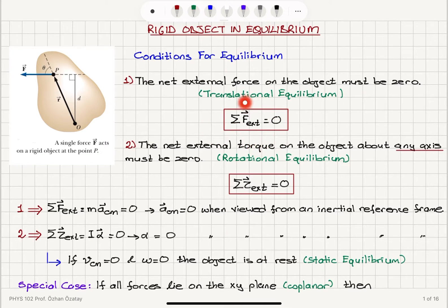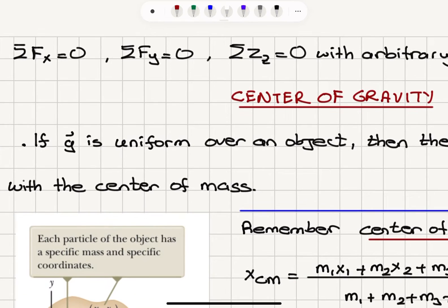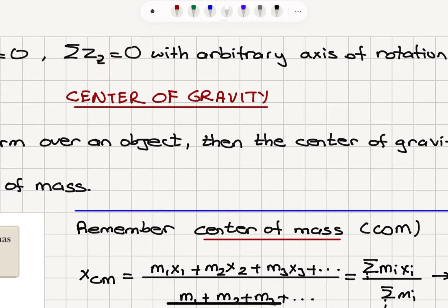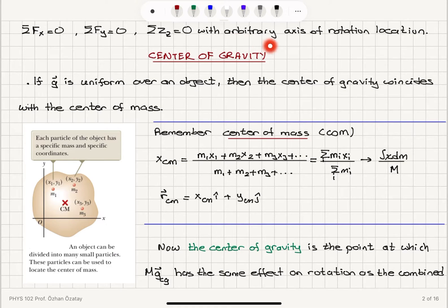We look at all forces acting on the object — they should add up to zero, and all torques should add up to zero: translational and rotational equilibrium. A special case: if all the forces lie on the x-y plane, they are coplanar. That implies the x-components of all forces add up to zero, the y-components add up to zero, and the torque with respect to the z-axis should be zero. This axis of rotation can be placed anywhere we like on the object.